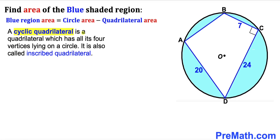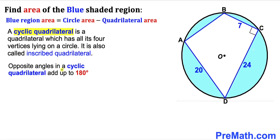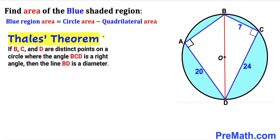A cyclic quadrilateral is a quadrilateral that has all four vertices on the circle. In our diagram, vertices ABCD are indeed on the circle — such a quadrilateral is also called an inscribed quadrilateral. Moreover, the opposite angles in a cyclic quadrilateral add up to 180 degrees. Since one angle is 90 degrees, the opposite angle must also be 90 degrees.